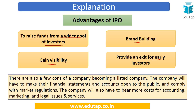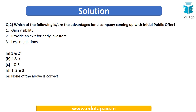However, there are disadvantages too. When a company becomes listed it has to comply with more regulations — SEBI regulations — and must make its financial statements and accounts open to the public, regularly publishing balance sheets and income statements in newspapers. This is a greater burden in terms of cost for accounting, marketing, and legal services. So the advantages are gaining visibility and providing an exit for early investors; less regulations is not an advantage. The answer is option A.